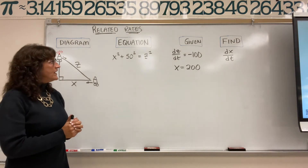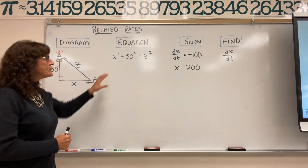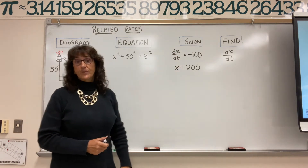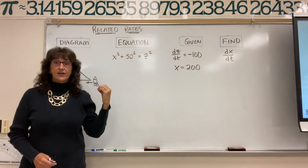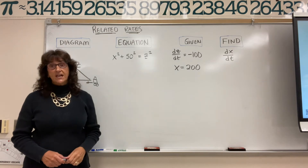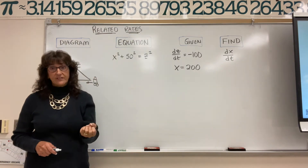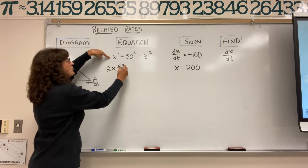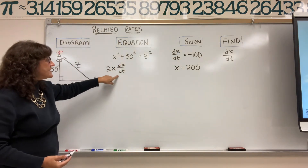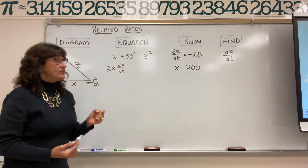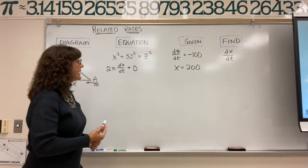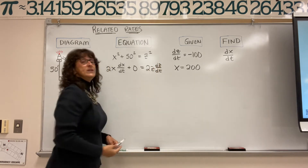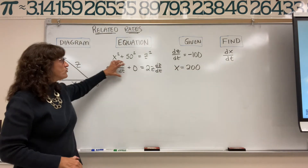Now we need our rate of change equation. We have to get an equation that relates the variables with our derivatives in it. So we are going to take every single term in our equation and differentiate implicitly with respect to time. The derivative of x squared is 2x times dx/dt. The derivative of the constant 50 squared is 0. The derivative of z squared is 2z times dz/dt. So here's our rate of change equation: 2x(dx/dt) + 0 = 2z(dz/dt).